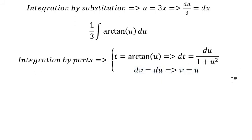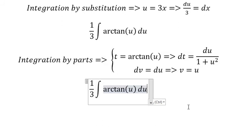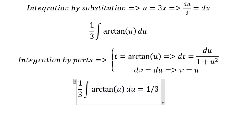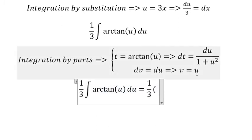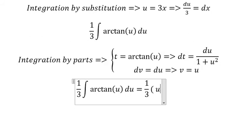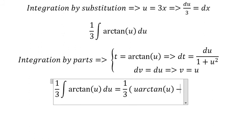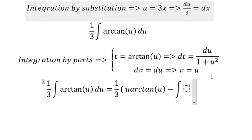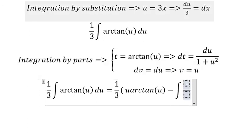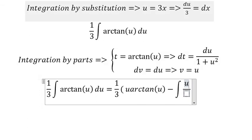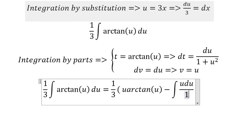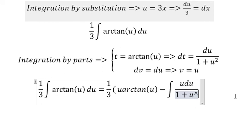Now we need to change this integral. u multiply with dt gives us u du over 1 plus u squared.